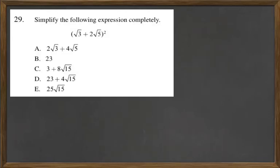Simplify the following expression completely. Square root of 3 plus 2 square root of 5 and all of that in parentheses squared. So make sure that you're putting all of that twice and you're going to end up needing to use the FOIL method.